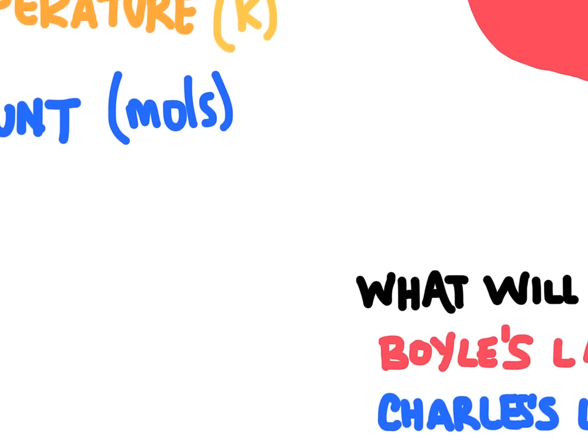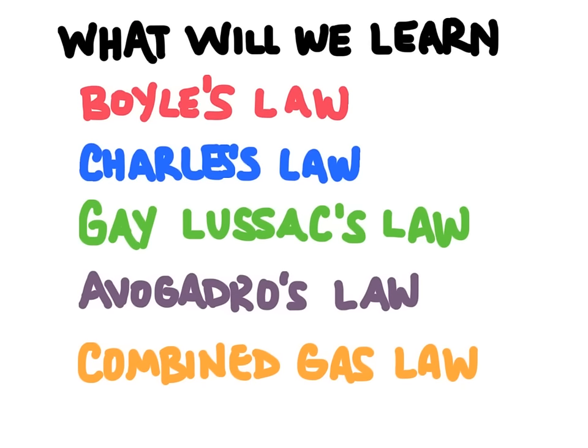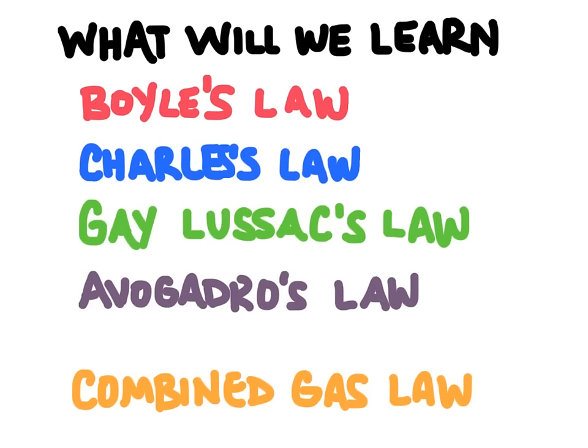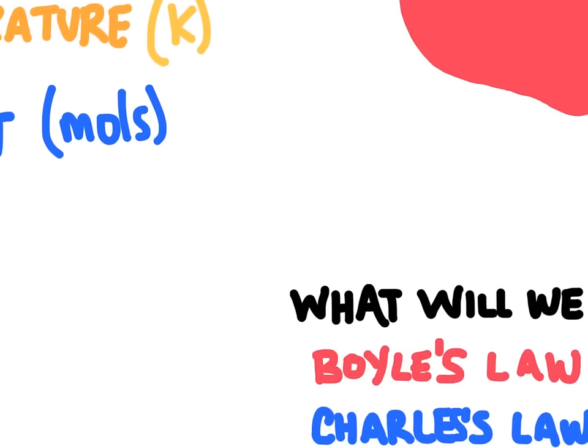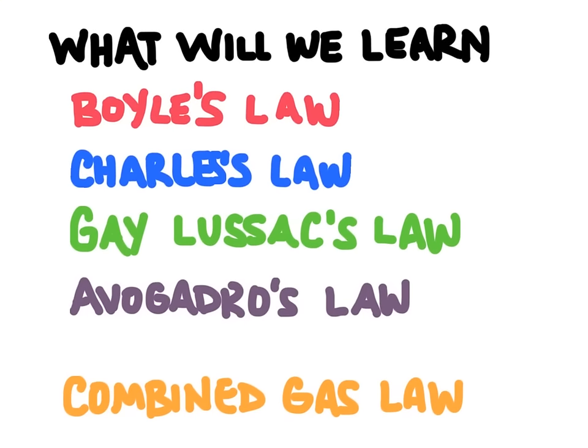The gas laws we're going to learn are Boyle's law, Charles' law, Gay-Lussac's law, Avogadro's law, and the combined gas law. Each of these gas laws takes on a few different forms mathematically, and we're going to use a form that relates an initial set of conditions to a changed set of conditions. Each of the laws compares two variables — except for the combined gas law — and the other variables remain constant.